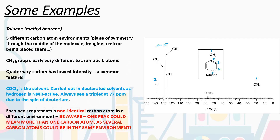Another peak that's fairly easy to deduce is carbon number two. This is called a quaternary carbon — it has four other carbon groups attached to it (the CH₃ group and the benzene carbons to left and right, one a single bond and one a double bond). Quaternary carbons always have the lowest intensity of any peaks in the spectrum. You can see the CH peaks for the benzene ring carbons three to five are much higher in intensity. So we label carbon two as the peak at about 140 ppm. The remaining peaks between about 125 and 130 ppm correspond to aromatic carbons three to five.